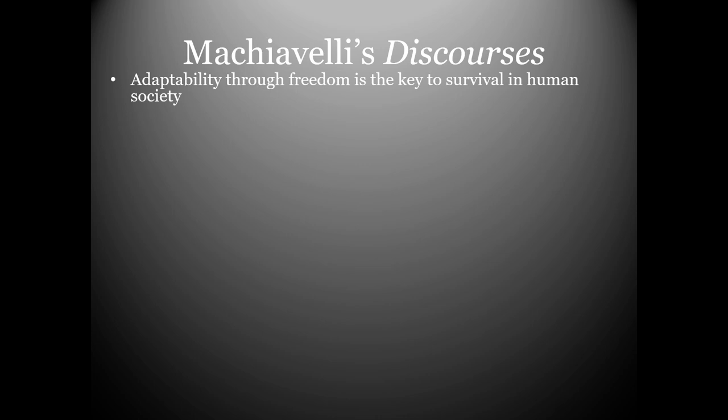In this one, he makes an argument for republics, or representative government. You could argue it's the opposite of The Prince, but it's not really the opposite — it's complementary. Machiavelli asserts that one reason one might ever want any kind of just or representative government, not just pure principalities, is that adaptability through freedom is the key to survival in human society. Without any adaptability, human society will eventually collapse.